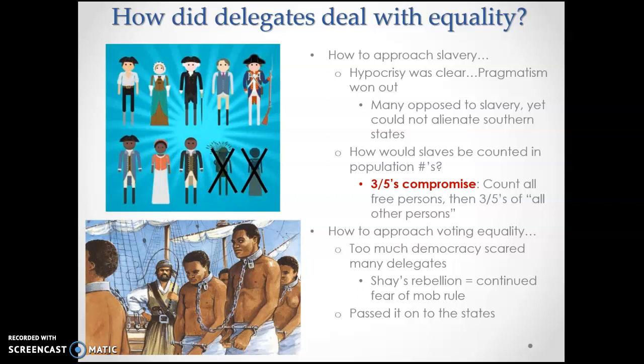The delegates came up with the idea that instead of setting a federal requirement for who can vote, they just wouldn't deal with it and passed it on to the states. The federal government allowed that if a state said a person could vote in a statewide election, they were automatically qualified to vote in a national election. This is interesting right now in Colorado, because a recent law was passed that 17-year-olds can vote in state elections.